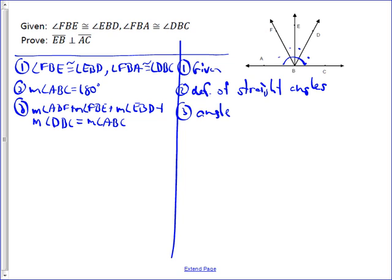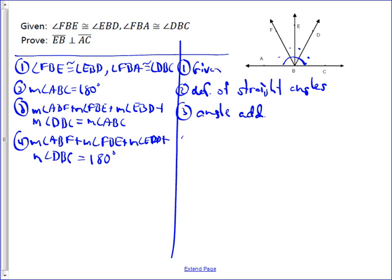And then, using our substitution property, we're able to show, and we're going to be writing a lot of angles out here, measure of angle ABF plus the measure of angle FBE plus the measure of angle EBD plus the measure of angle DBC equals 180. And that's just by the substitution property.